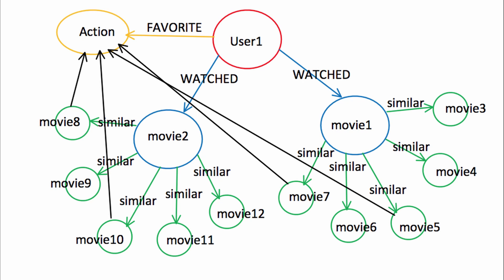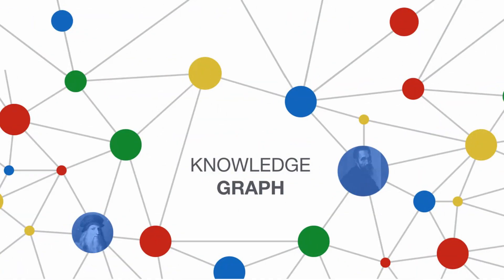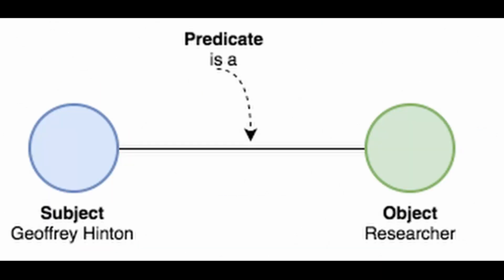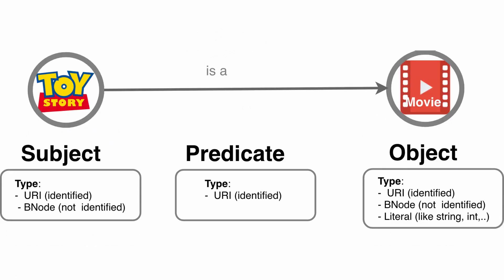The next type of graph database is the knowledge graph. While a property graph is constructed based on two attributes, a knowledge graph is constructed with three attributes: subject, predicate, and object — called triplets. The unique identifier for these three attributes is called a URI, or Unique Resource Identifier.